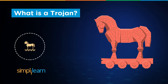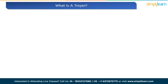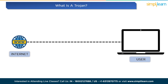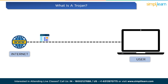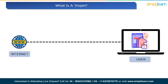Let's define what a Trojan is. A Trojan is a type of harmful software that pretends to be something useful or desirable while actually being malicious. It's like a sneaky imposter hiding inside something you want, like a fun game or a helpful app.